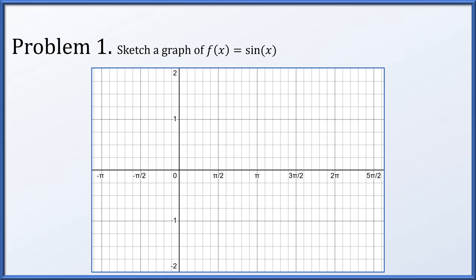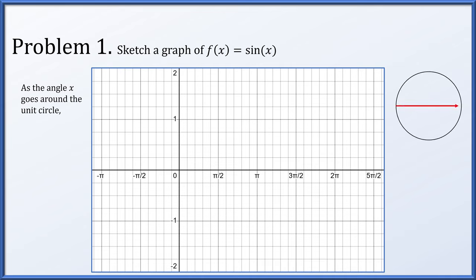In problem one, we're going to sketch a graph of f(x) = sin(x), pretending that we have not seen this graph on our calculators or textbooks. As the angle x goes around the unit circle, since x is being plugged into sine, we should consider it to be an angle. Here's the unit circle with the initial direction of x pointing straight right as an angle of 0. The sine of x is the height of the point on the unit circle. Initially, at an angle of 0, we're pointing straight right, and the point has height 0, so sin(0) = 0. We put (0, 0) into our plot.